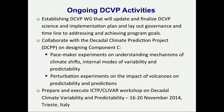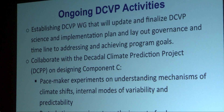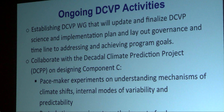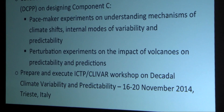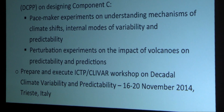The activities we are involved in right now: since it's a new activity, we wrote a prospectus. It went to the SSG within CLIVAR, and those and other research foresight got the go-ahead to do the following things. One is to put together a working group. Another is to collaborate with the DCPP on designing component C, and to prepare a first workshop that will bring together a community interested in this issue.